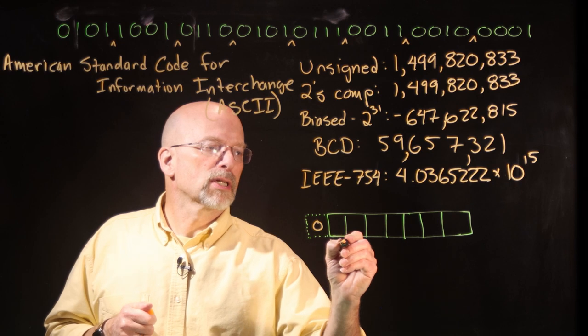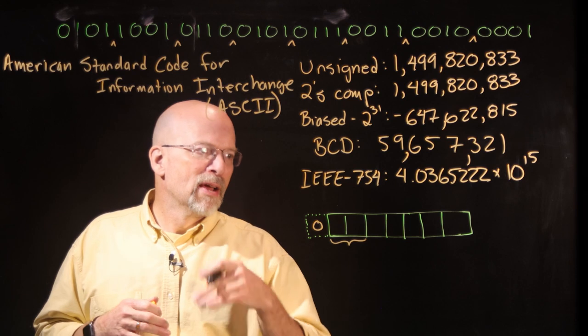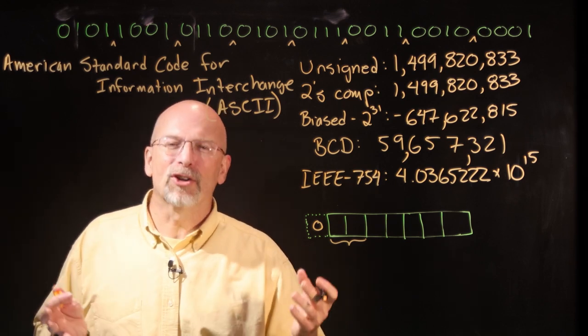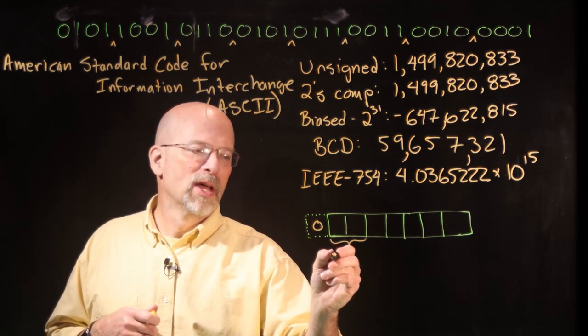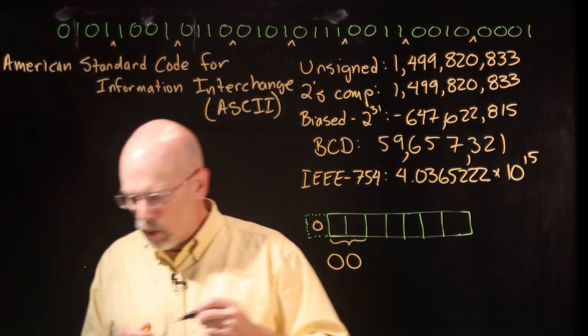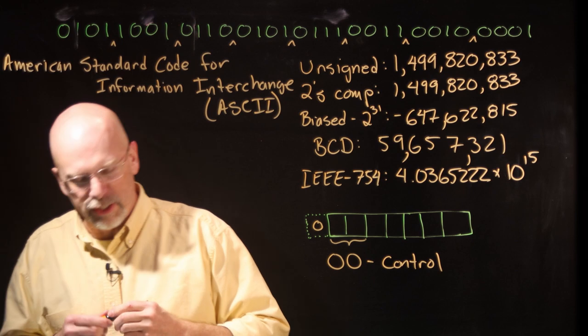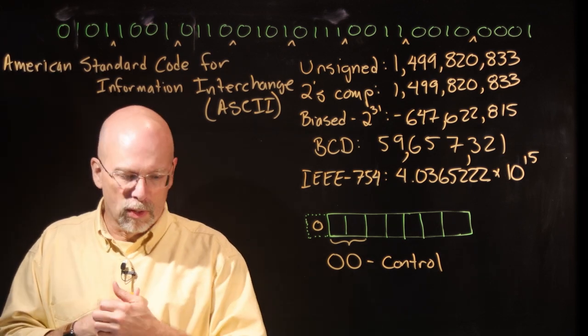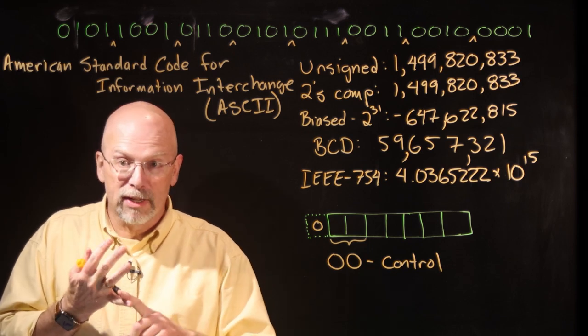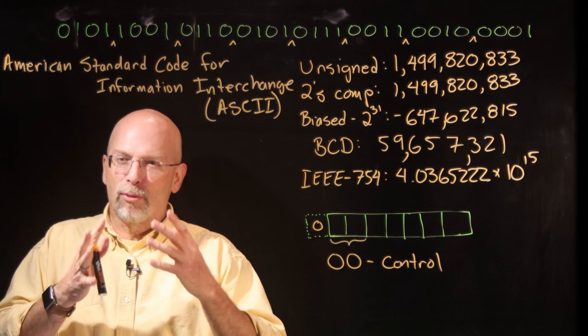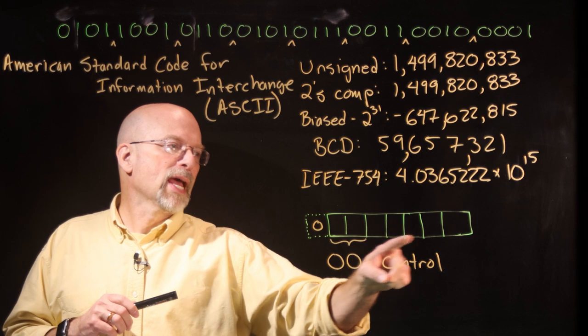Now, these most significant two bits, they tended to categorize the type of character that we were showing. So if it started with a zero, zero, what you were looking at was mostly control. So this thing, like I said, end of text or these line feeds, carriage returns, form feed. There was a lot of printer type information that came in there.